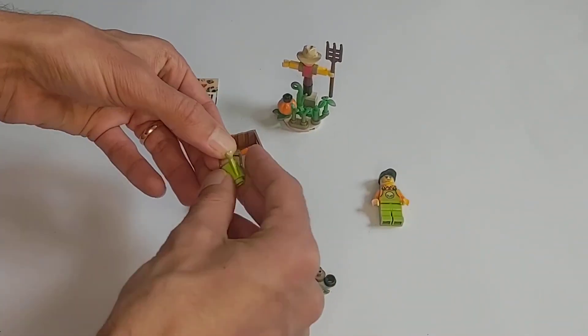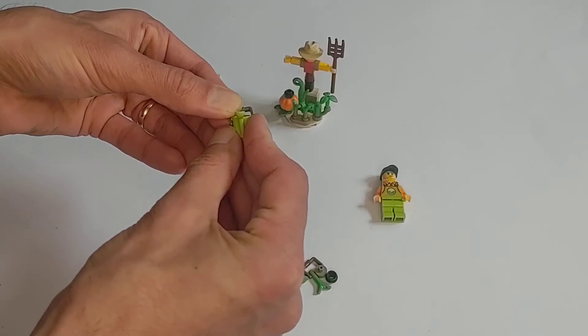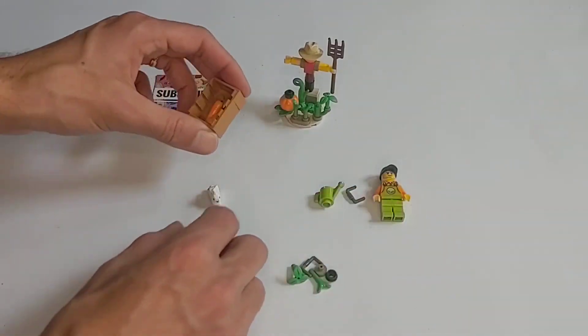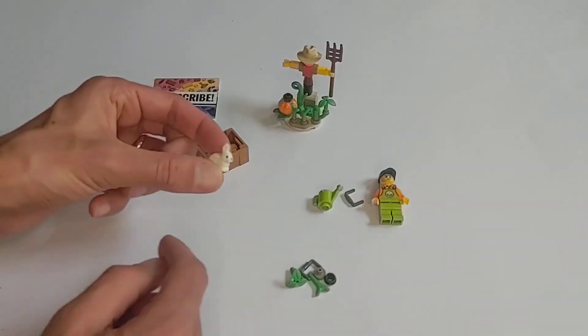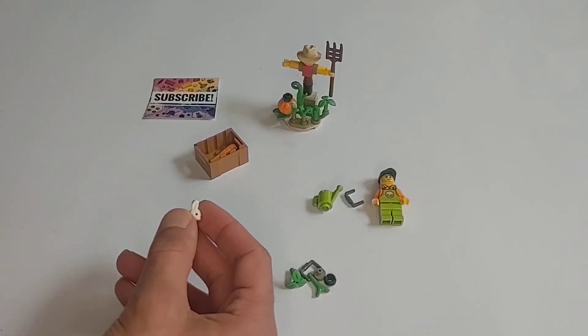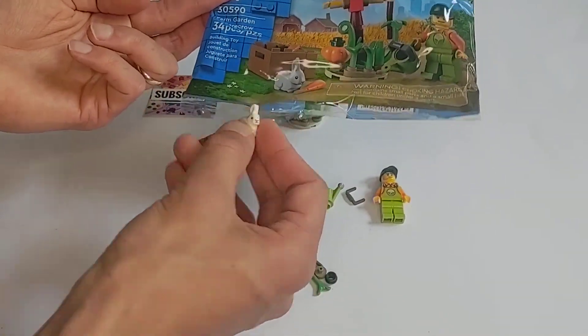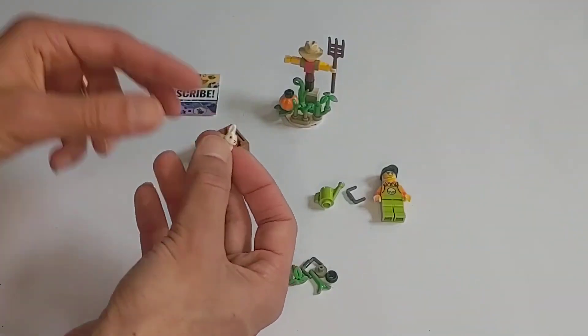You get some accessories, the watering can, which I just disassembled for some reason. You get some carrots and a rabbit, which looks gray on the cover, but I guess it is a white rabbit.